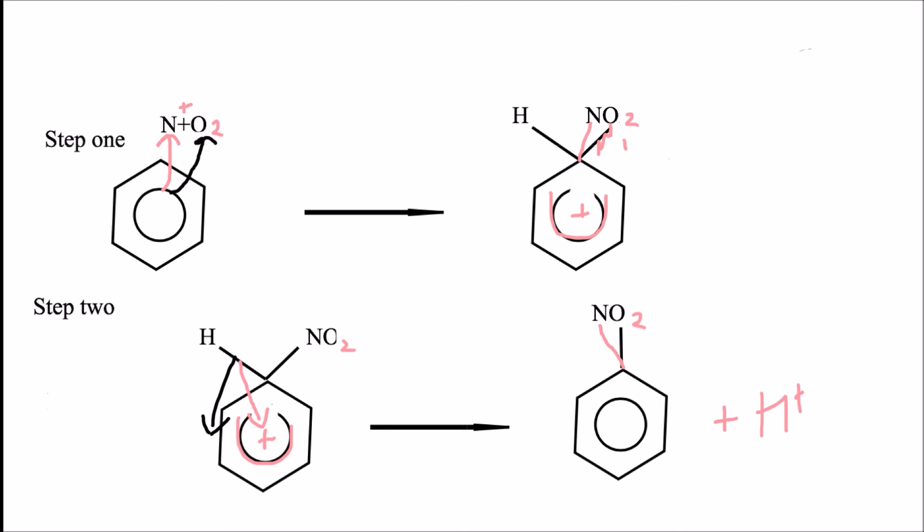Those are enough mistakes to basically lose you all the marks on this question. So please don't make those mistakes because it will be a real shame if you've basically learnt the mechanism but then lose marks because you were careless or you weren't thinking or you just drew your arrows too quickly. So it's really important we think about our mechanisms really carefully, really slowly and check we're doing enough to get all the marks.